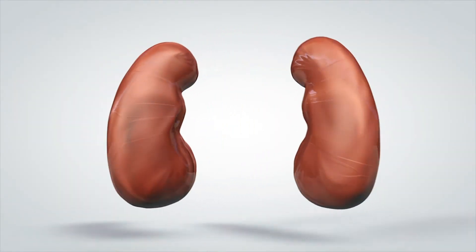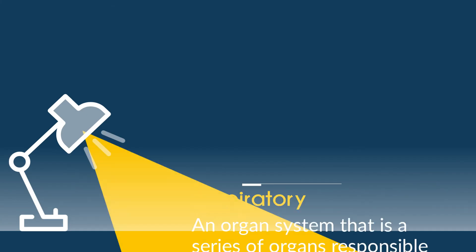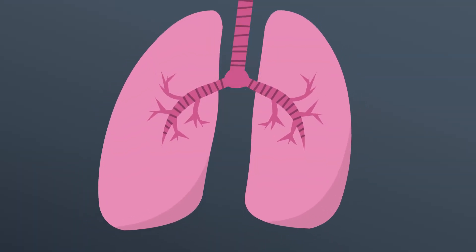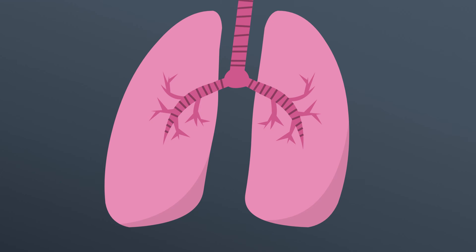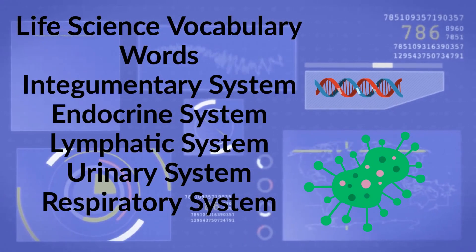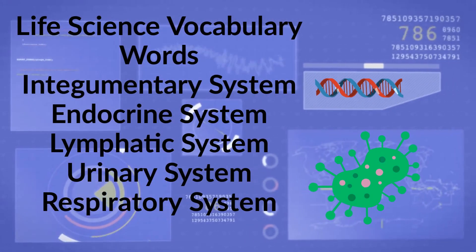And the respiratory system — an organ system that is a series of organs responsible for taking in oxygen and expelling carbon dioxide. The primary organs of the respiratory system are your lungs. So there we go — Life Science Vocabulary.